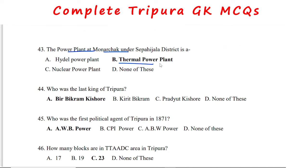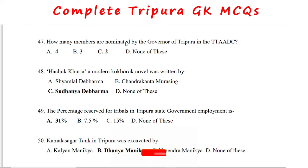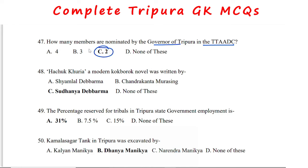The river Gumuti of Tripura originates from Tirthamukh. The power plant at Monarchak under Sipahijala district is a thermal power plant. The last king of Tripura was Virbikram Kishore Manika. The first political agent of Tripura, appointed in 1871, was A.W.B. Power. The number of members nominated by the Governor of Tripura in TTADC is two.